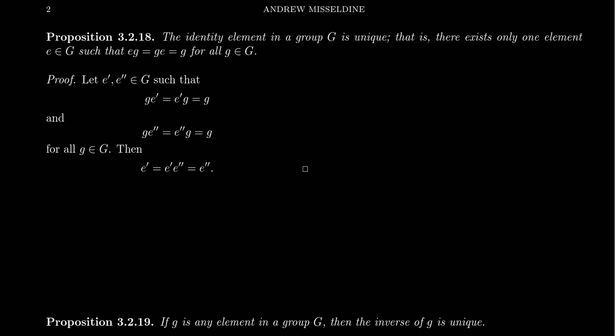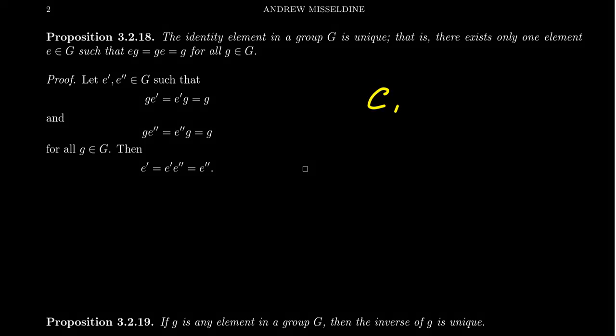In this video, I want to talk about uniqueness of elements in a group. Because in the previous video, we had talked about how we can denote the identity as an E or as a one or something like that. But that's kind of putting the cart in front of the horse, isn't it? Well, how do we know there is the identity? Why isn't it like an identity?